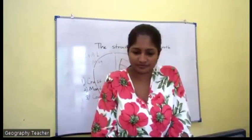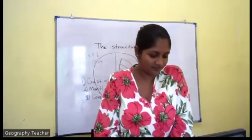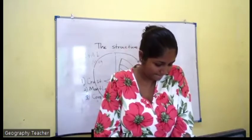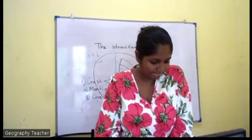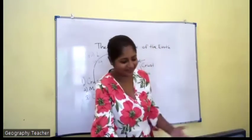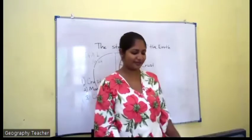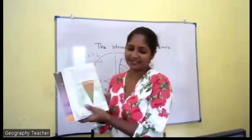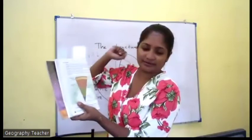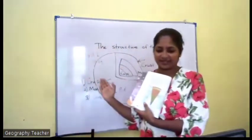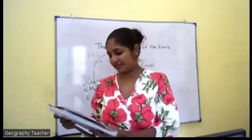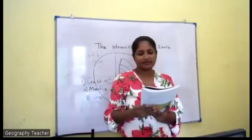The mantle is a layer that extends to a depth of 2,900 kilometers from the surface of the Earth and forms two-thirds of the mass of the Earth. When we compare with the crust, this depth is much greater — about 2,900 kilometers.